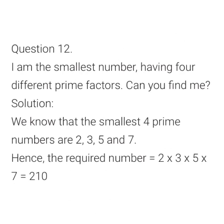The last question of Exercise 3.5, question number 12: I am the smallest number having 4 different prime factors — can you find me? We know the smallest 4 prime numbers are 2, 3, 5, and 7. Multiplying all four gives 2 × 3 × 5 × 7 = 210. So the smallest number formed by 4 different prime factors is 210.